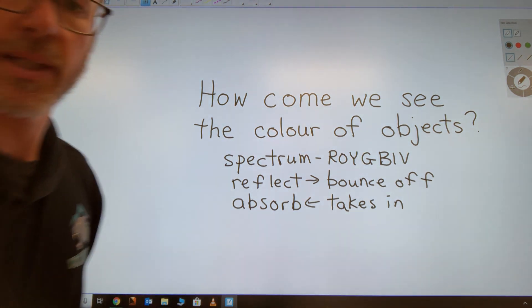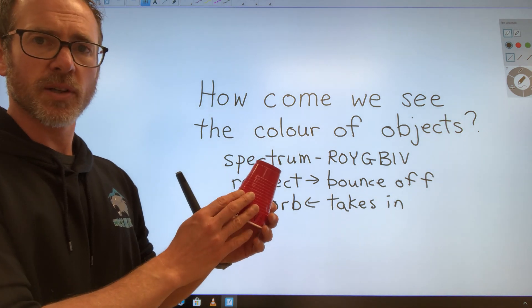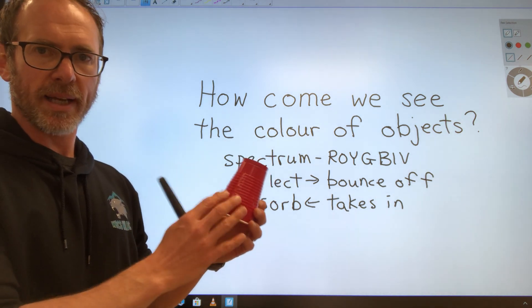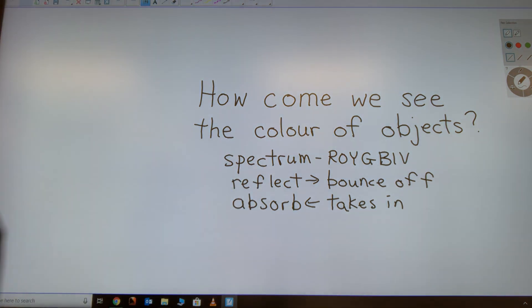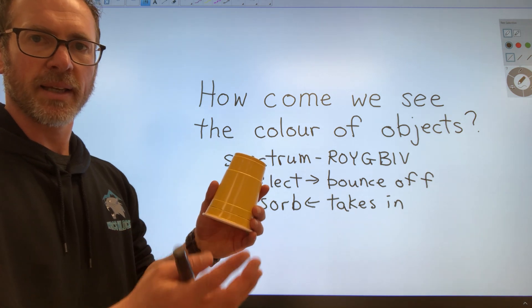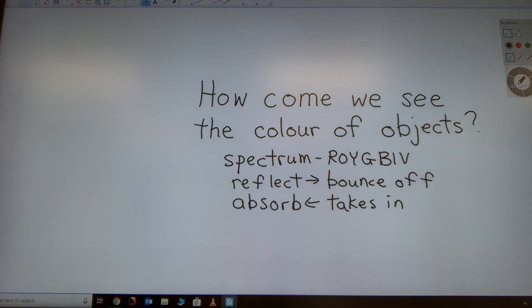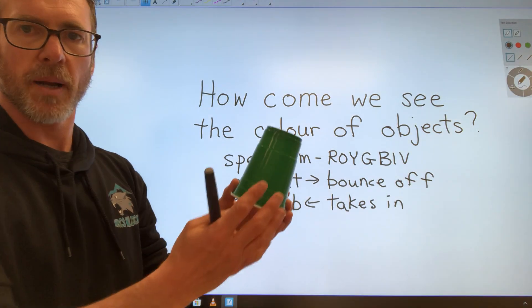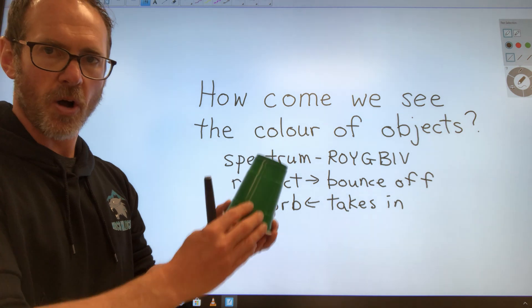So this cup right here, it reflects red when white light hits it and absorbs all the other colors. This cup reflects yellow light and absorbs all the other colors. This cup reflects green light and absorbs all the other colors.